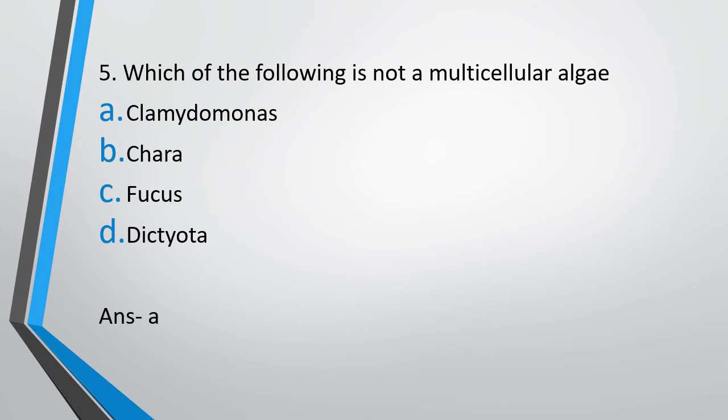You need to read the question very carefully. The question asks which of the following is not a multicellular algae — not which is a multicellular algae. In exams, reading in a hurry often causes you to miss the word 'not', which is where mistakes happen. So read carefully: the correct answer is Option A, Chlamydomonas.